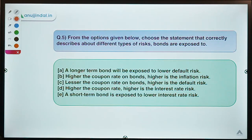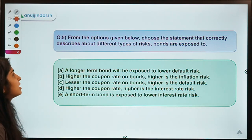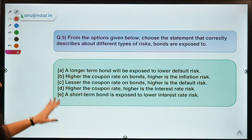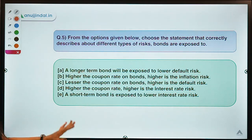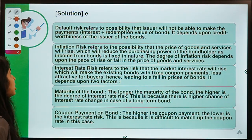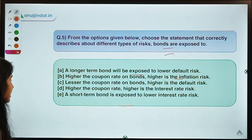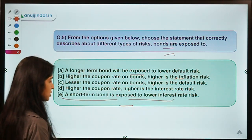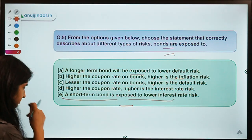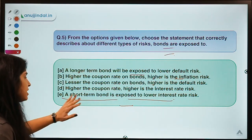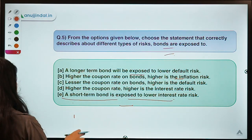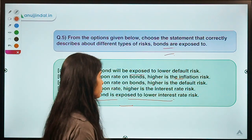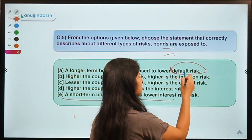Here is the last question, which says: from the options below, choose the statement that correctly describes different types of risk that bonds are exposed to. Five options are given and you have to select the correct one. The correct option is option E, which means: a short-term bond is exposed to lower interest rate risk.